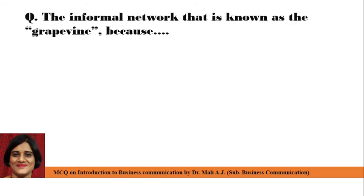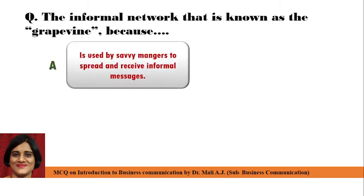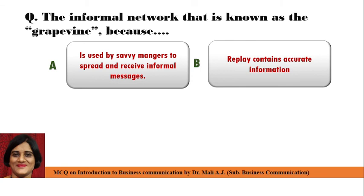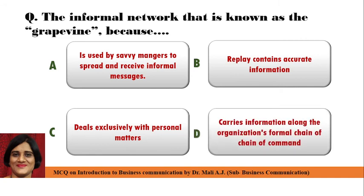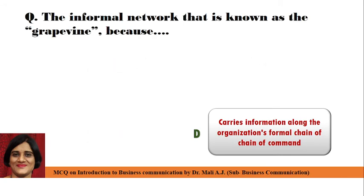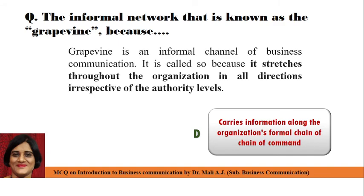Next question: The informal network that is known as Grapevine — Point A: Is used by savvy managers to spread and receive informal messages, Point B: Replies contain accurate information, Point C: Deals exclusively with personal matters, Point D: Carries information along the organization's formal chain of command. The informal network known as Grapevine carries information along the organization's formal chain of command. Grapevine is an informal channel of business communication; it is called so because it stretches throughout the organization in all directions, irrespective of the authority levels.